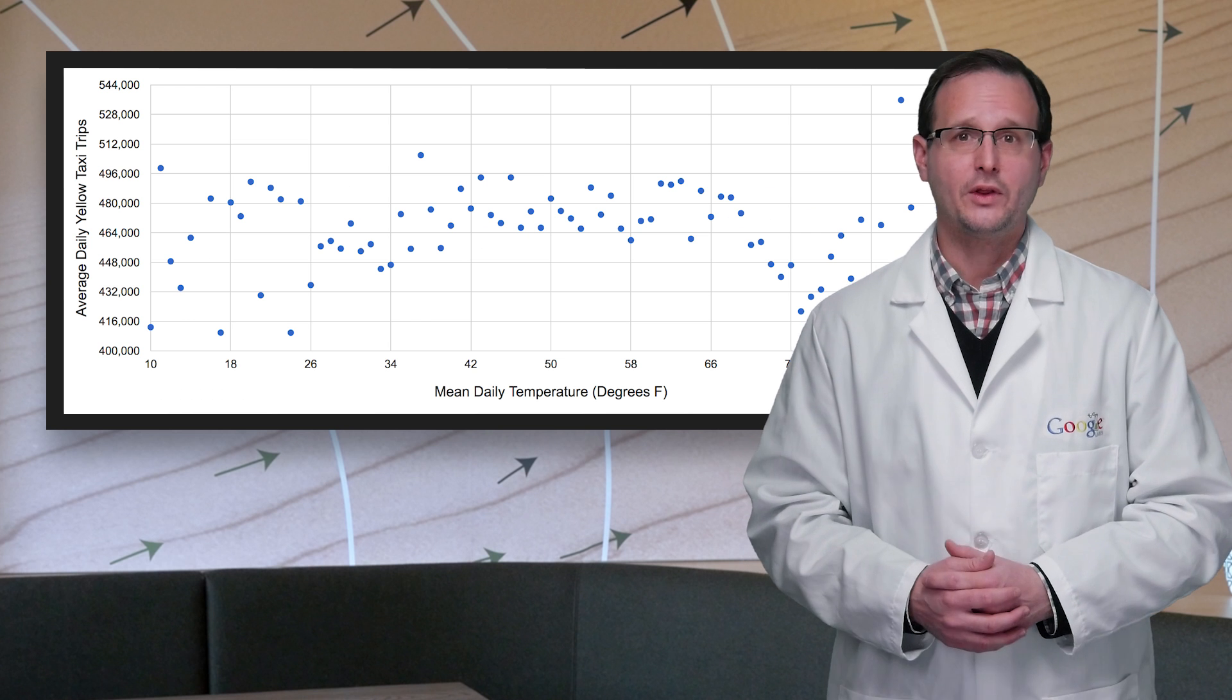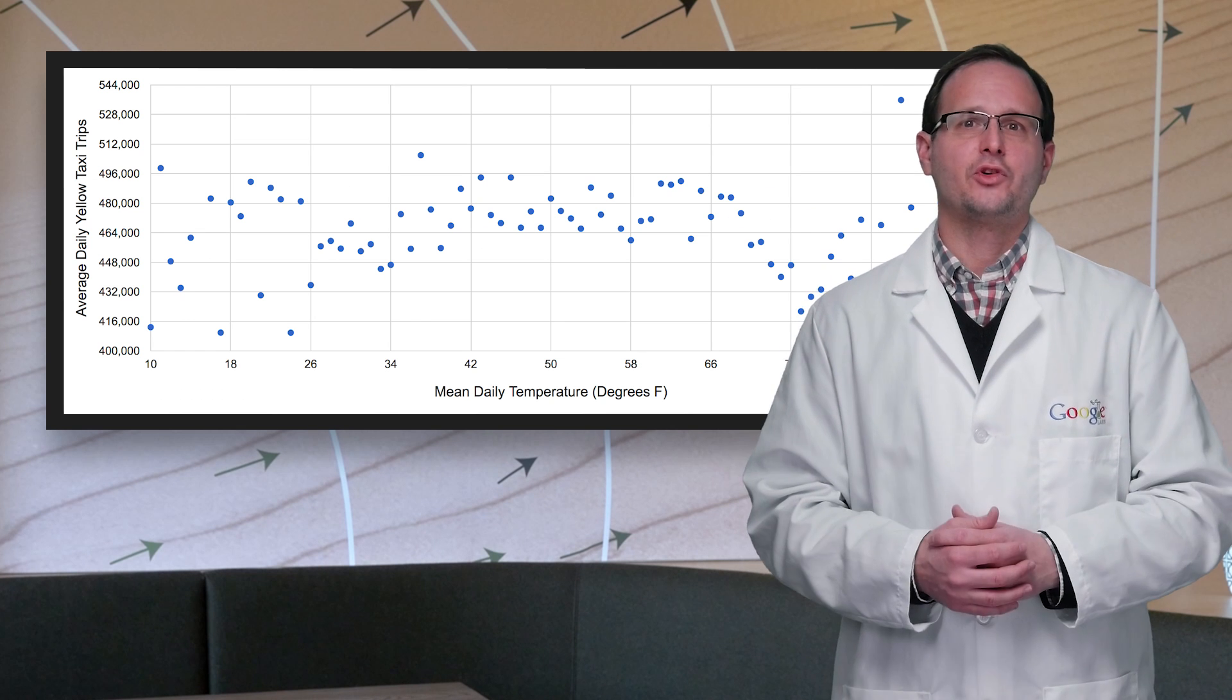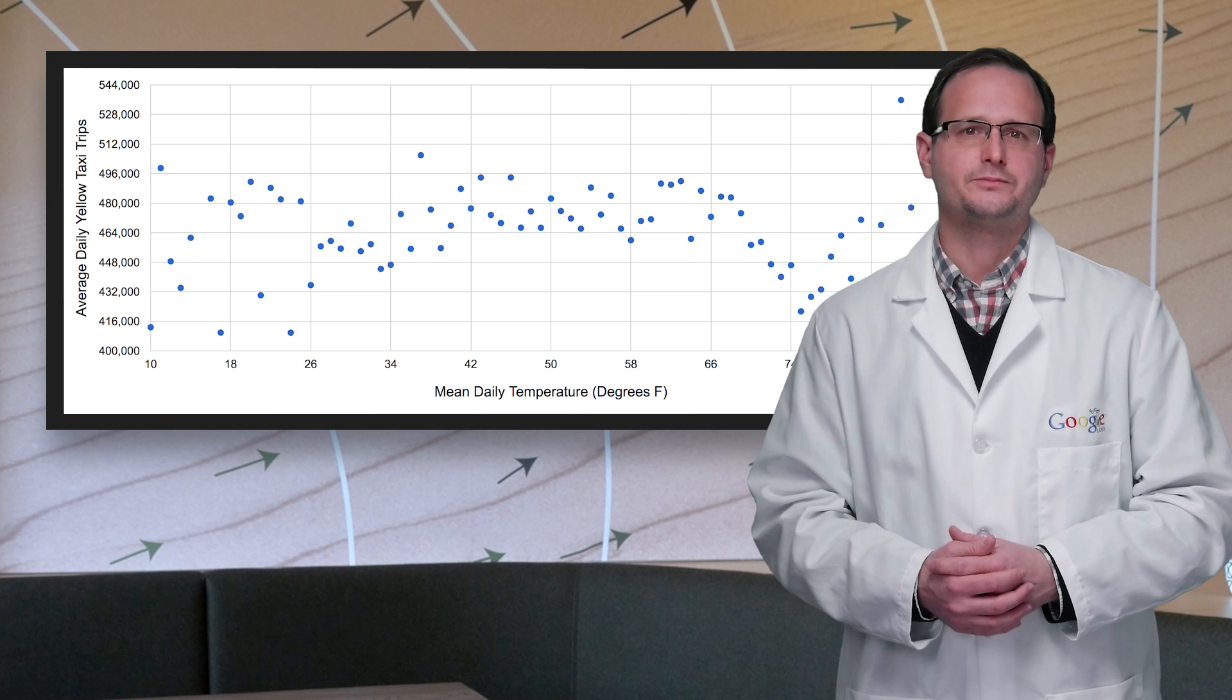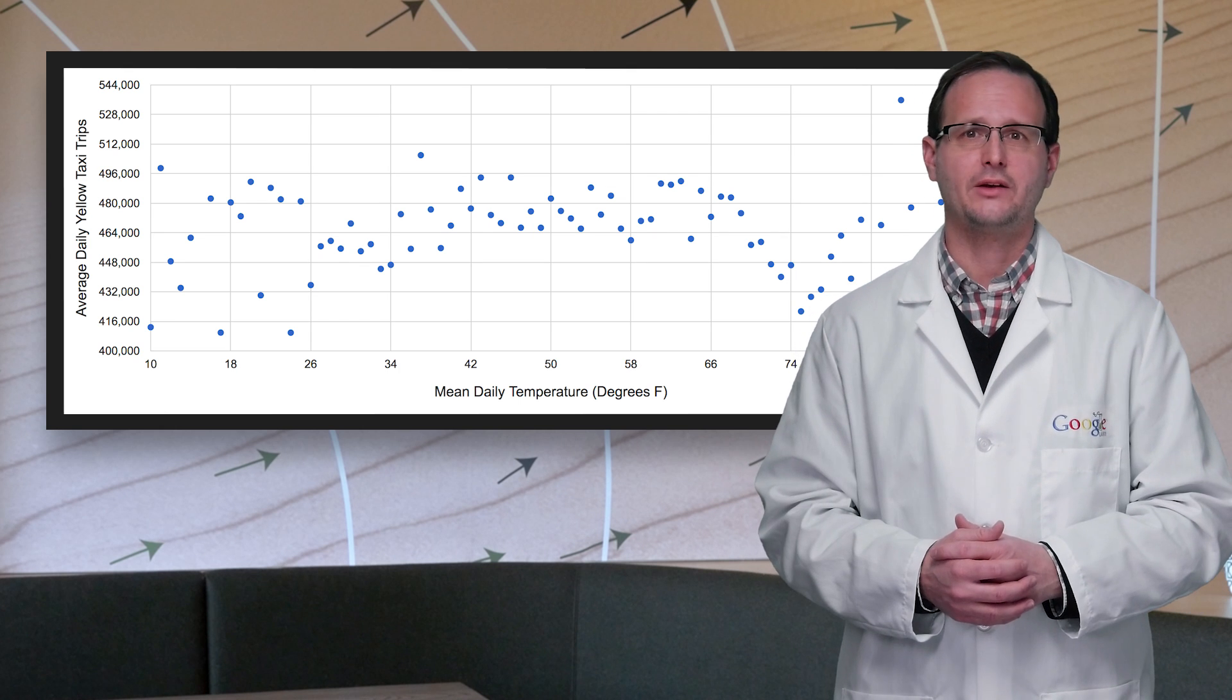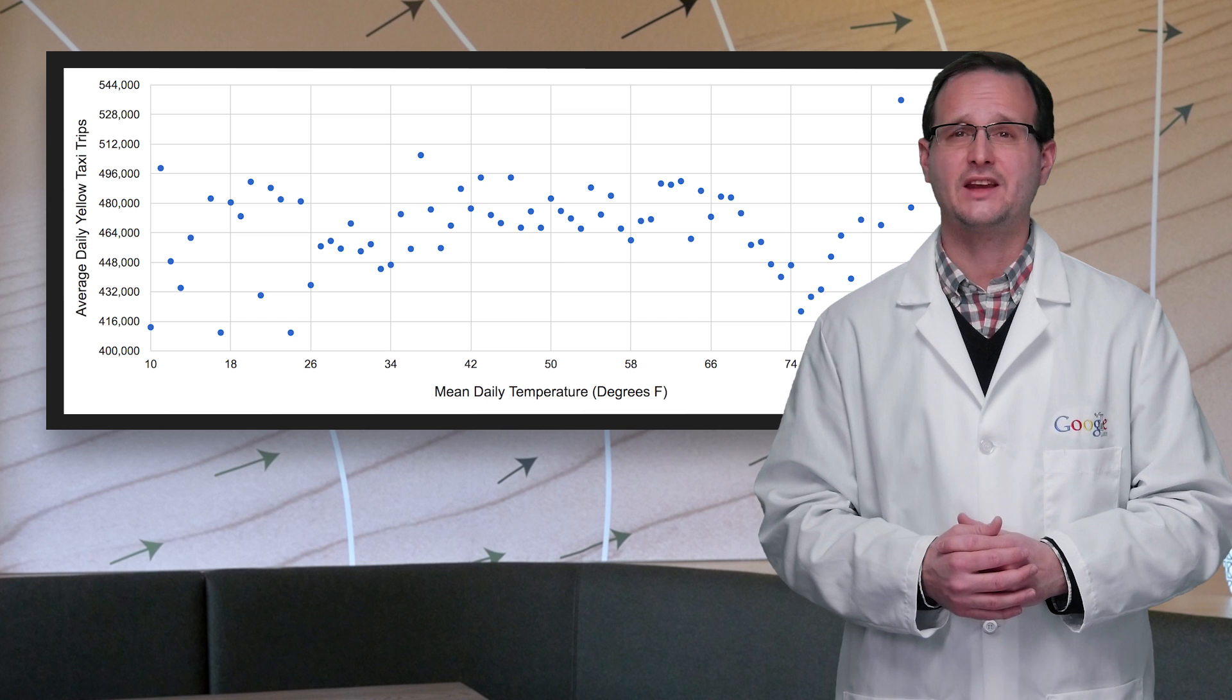Now, using our weather table, let's see if temperatures have any effect on cab rides. Unlike for city bikes, this graph doesn't show a strong pattern. But what other interesting patterns can we find?